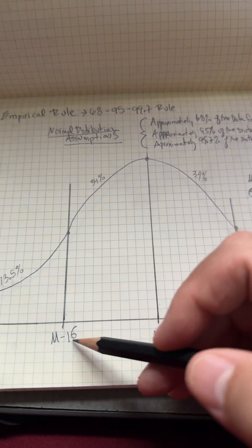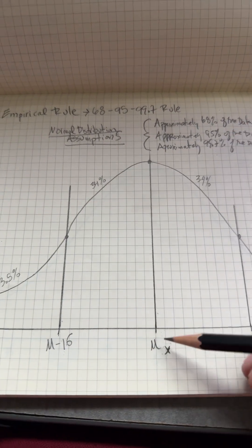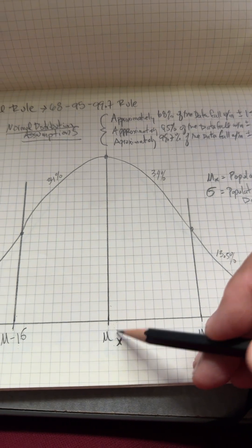How? By using the standard deviation. Here you have the mean of the bell curve, right, which is the population mean.